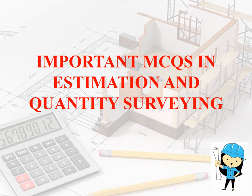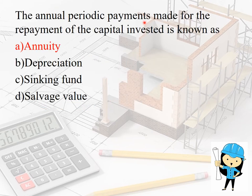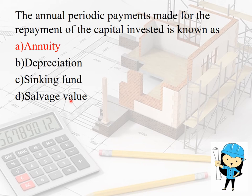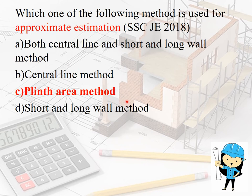The annual periodic payment made for the repayment of capital invested is known as annuity. The sinking fund is the gradual accumulation of amount by way of annual periodic deposit made for the replacement of a structure at the end of its useful life. Salvage value is defined as the value of the property without being dismantled — if the question says 'without being dismantled,' it is called salvage value.